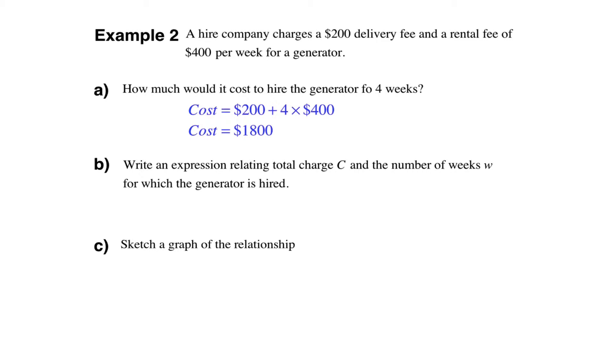The next step then is to write an expression relating the total charge C and the number of weeks W for which the generator is hired. Well, if we think about that, if we don't hire it, if we don't actually rent it for any number of weeks, we'd still be charged a $200 delivery fee. Although, why you'd have it delivered without renting it? I have no idea. So that's obviously the value when W is zero. And then the rate per week is $400, which is the gradient of that graph. So the expression we would write would be C is $200 plus $400W.